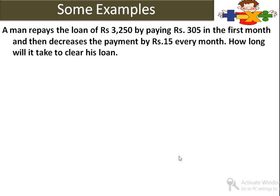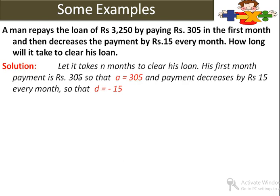A man repays a loan of Rs. 3,250 by paying Rs. 305 in the first month, then decreases the payment by Rs. 15 every month. How long will it take to clear his loan? इसका loan है 3,250; पहली installment 305 है. हर installment में वो 15 रुपए कम कर रहा है, मतलब common difference है minus 15. Let it take n months to clear the loan. So a equals 305 and d equals minus 15.